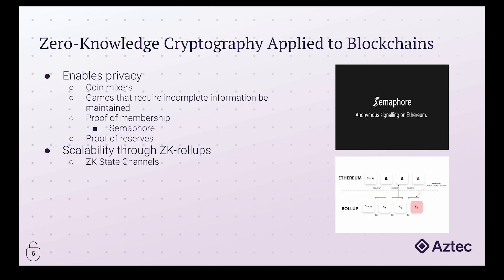Moving on to proof of membership — a notable example is Semaphore. Semaphore allows you to signal, or send a message, on behalf of a group without revealing who you are in that group. For example, if the group comprises a list of public Ethereum addresses, you prove membership by supplying your private key as a private input, showing your private key corresponds to one of the public keys in the list, but no one knows which member you are.